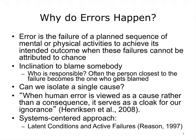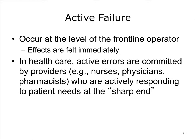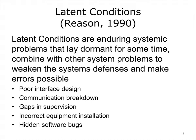Active failure represents the face of error. The effects of active failure are immediately felt. In healthcare, active failures are committed by providers such as nurses, physicians, or pharmacists who are actively responding to patient needs. Examples would be giving a medication to the wrong patient or performing the wrong surgical procedure. Latent conditions are less visible but equally important — enduring systemic problems that may not be evident for some time, but when combined with other system problems, they weaken system defenses and make errors possible. Potential latent conditions include poor interface design, communication breakdown between key actors, gaps in supervision, incorrect equipment installation, and hidden software bugs.